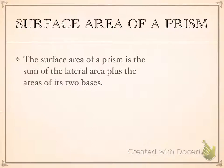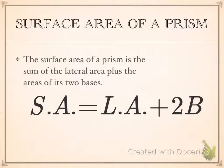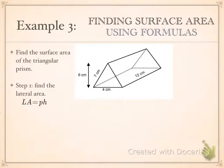The surface area of a prism is the sum of the lateral area plus the area of its two bases. The formula looks like this: surface area for a prism equals lateral area plus our two bases. We had a formula for lateral area, so we do that separately, then add in the two bases. Let's go ahead and do an example — this is the third example in our notes, and I'll work through this one with you.